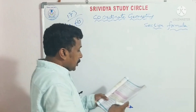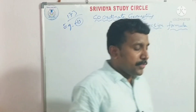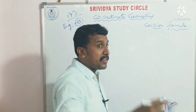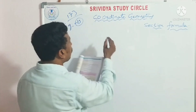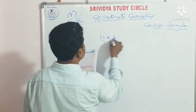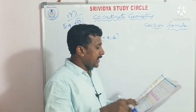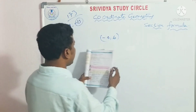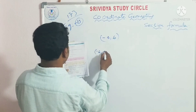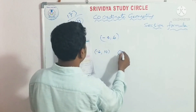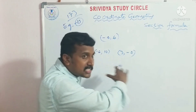So this is the point. It is a very good type of question. In which ratio does the point (-4, -6) divide the line segment joining the points?